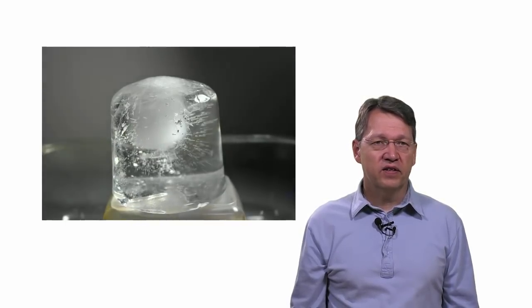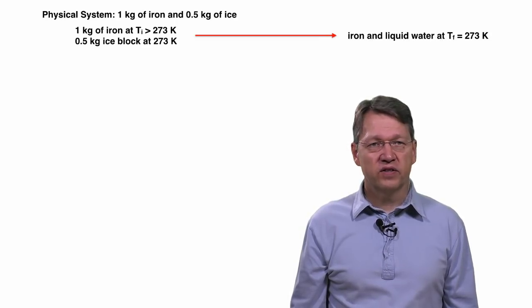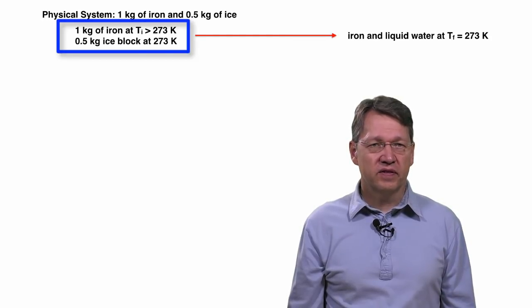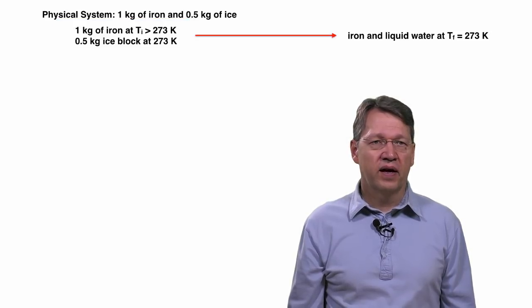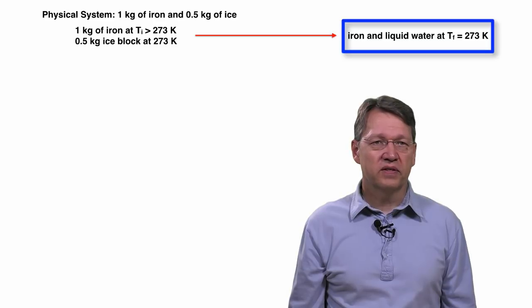Can we find the initial temperature of the iron? In this case, our physical system is one kilogram of iron and 0.5 kilograms of ice. At the beginning, when we put them in the insulated container, the ice is at 273 Kelvin and the iron is at a hotter temperature. At the end, everything is at 273 Kelvin and all the ice is melted to liquid water.